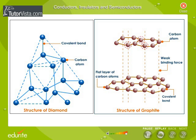In Conductors, the electrons in the outermost orbit are very weakly bound to the atom and can be freed very easily. Such electrons are called free electrons.